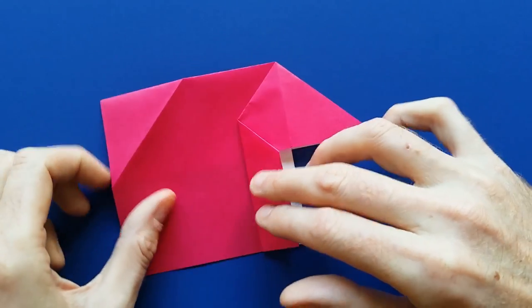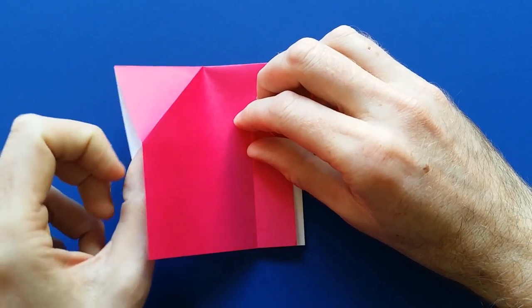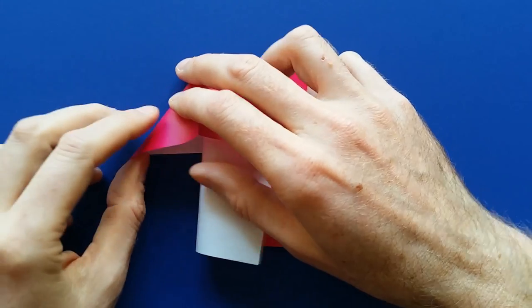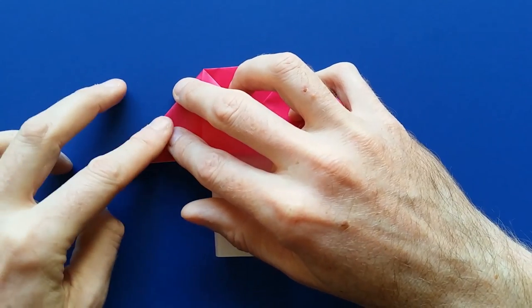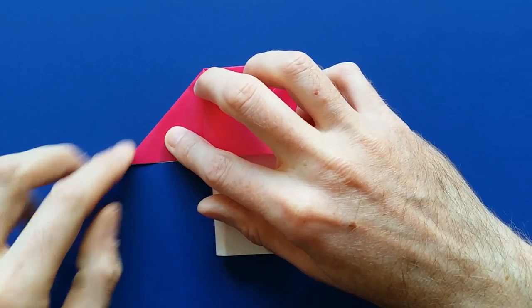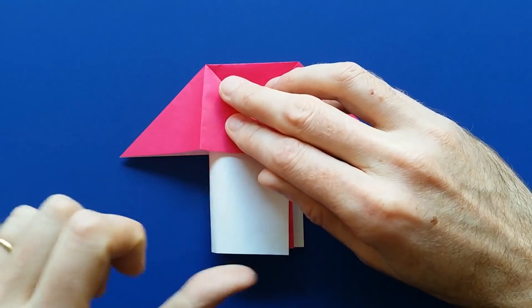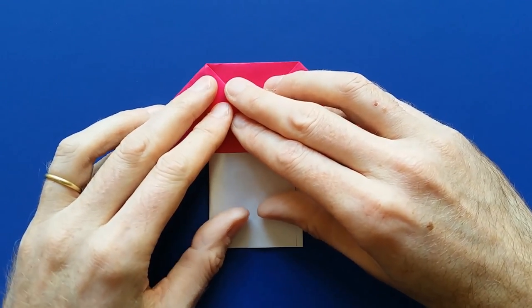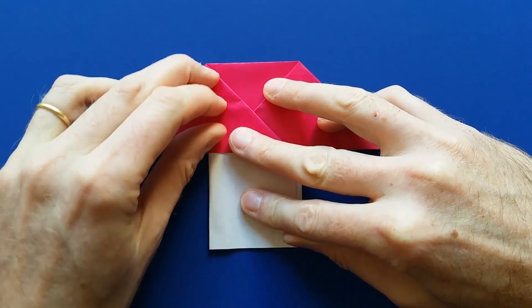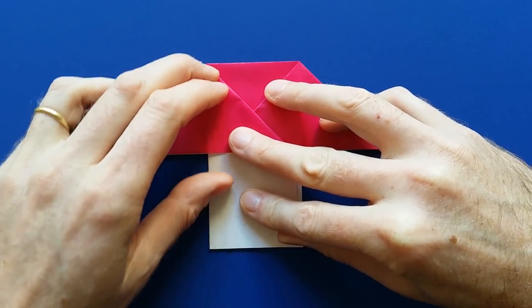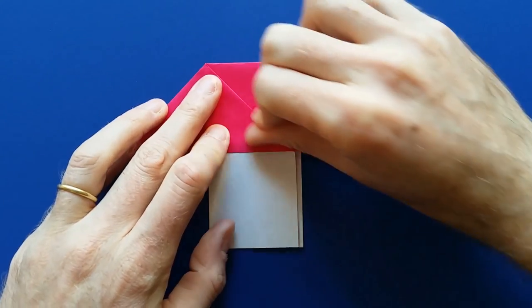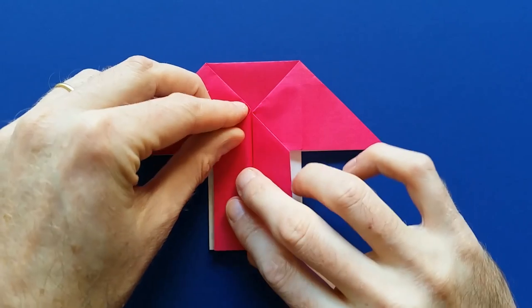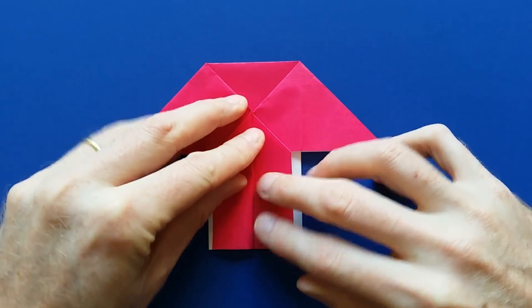And we'll do the same thing on the other side. So put your finger to separate the layers and start to rotate the flap. Invert this diagonal fold and mark it. And keep the bottom aligned. And then just flatten. And again, fold this flap at the same level.